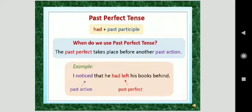Again one more example. When do we use past perfect tense? The past perfect takes place before another past action. I noticed that he had left his book behind. So noticed is the past action and when another action occurred, had left is here another action. That's why we have used past perfect tense over there.